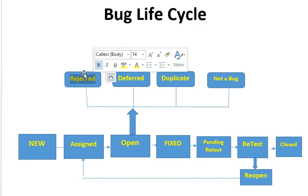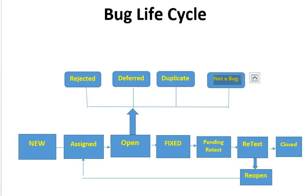The next state is Rejected. The bug gets rejected when the developer feels it is an incorrect observation. There can be some configuration issues, a misunderstanding of the requirement, or incorrect input by the tester. The developer will provide comments to clarify and move the bug to the Rejected state.